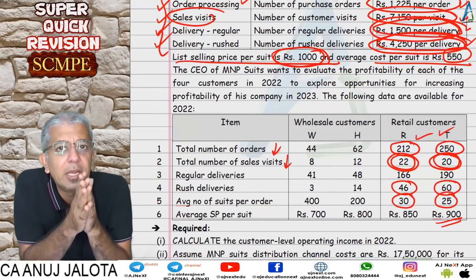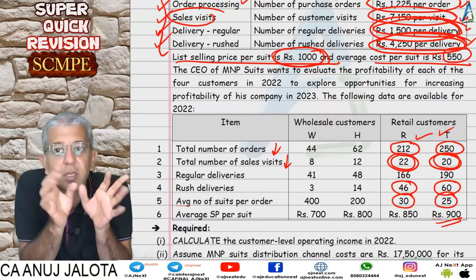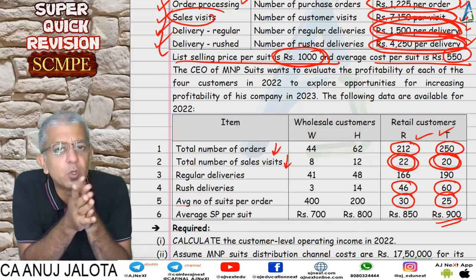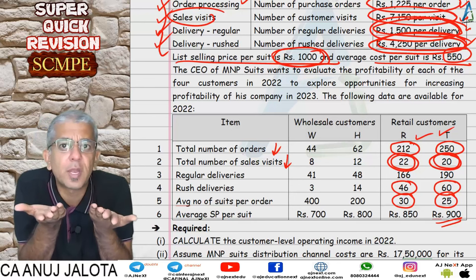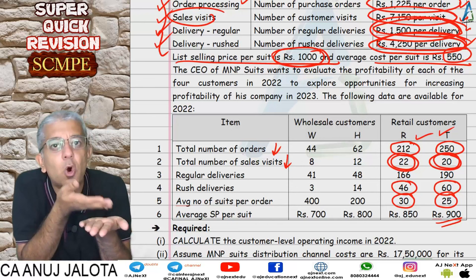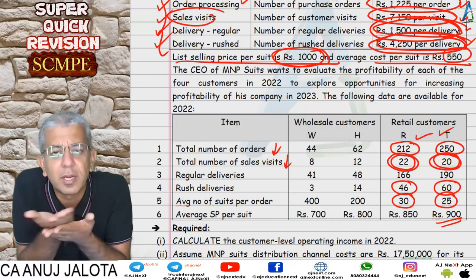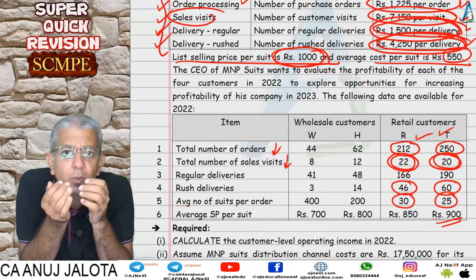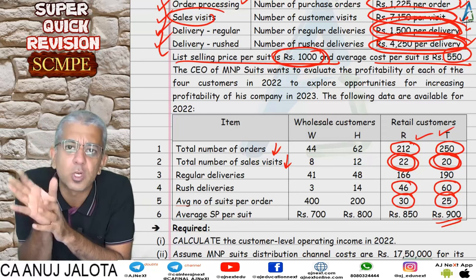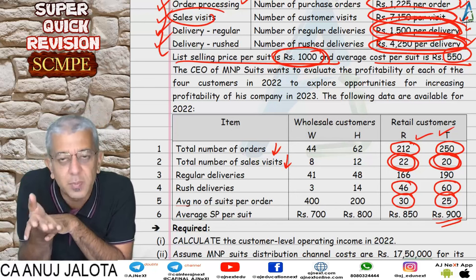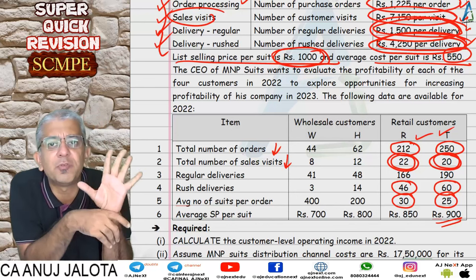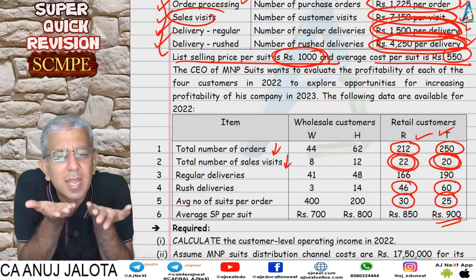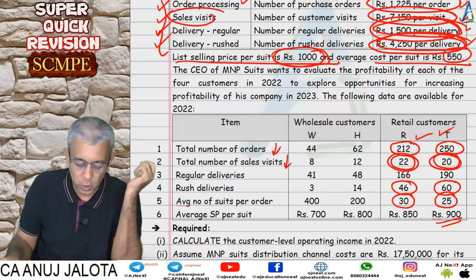To reduce rush deliveries, we can ask RNT to place orders well in advance so normal delivery is possible. If that doesn't work, offer say five free rush deliveries per year, then charge for any additional rush deliveries — making the customer bear that cost. Alternatively, tell RNT that beyond a certain number, rush delivery charges are theirs to bear. All these steps can help increase profit from each customer.